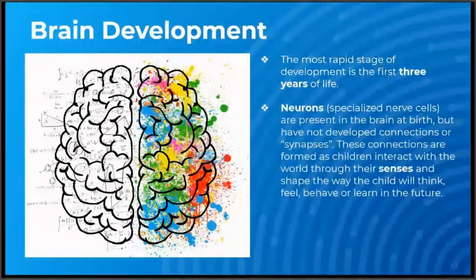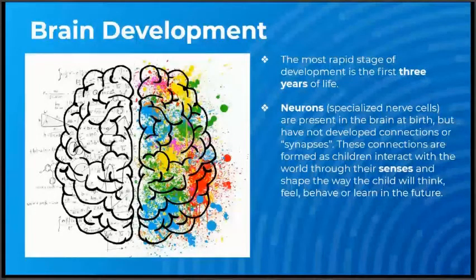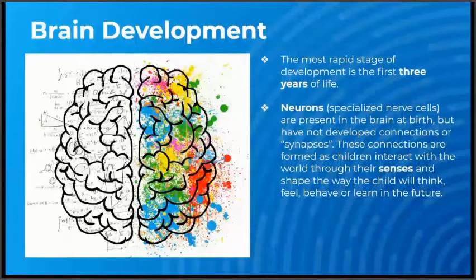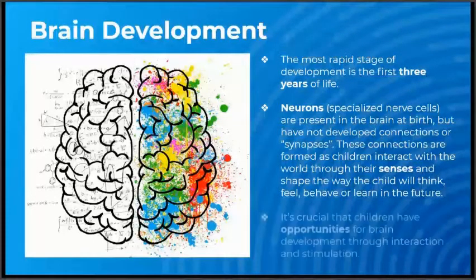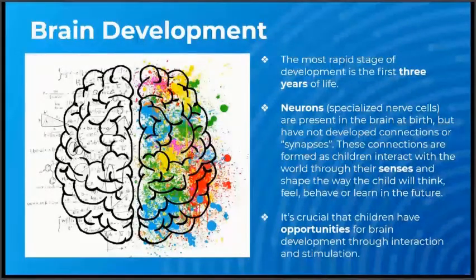Neurons, specialized nerve cells, are present in the brain at birth but have not developed connections or synapses. These connections are formed as children interact with the world through their senses and shape the way the child will think, feel, behave, or learn in the future. It's crucial that children have opportunities for brain development through interaction and stimulation.